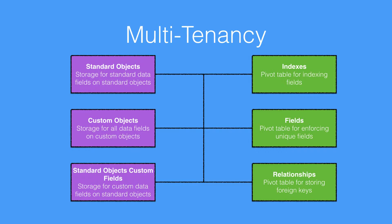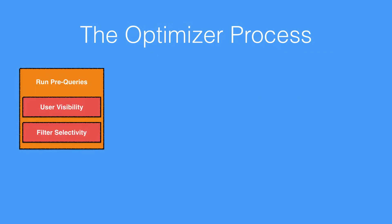Salesforce has built the Force.com Query Optimizer. What it does is take your SOQL query — whether it's in a report, a list view, or just a plain old SOQL query — and find the best way of writing that as a SQL query. It selects the best table from our previous slide to run the main query on and then comes up with the correct series of joins to retrieve the data for you.